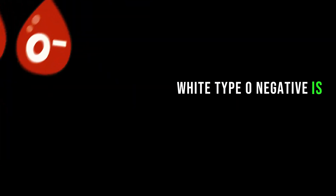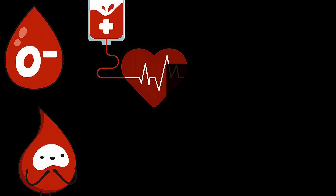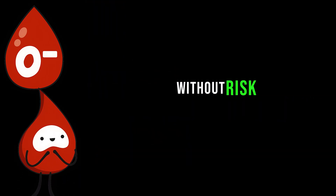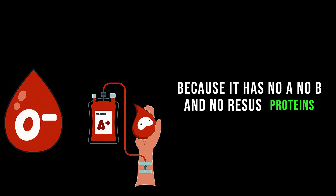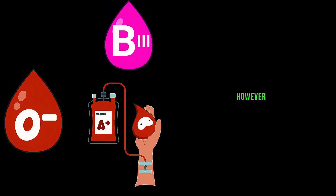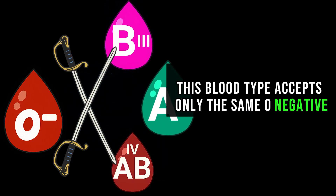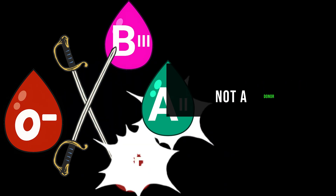While type O negative is rare, it is considered a universal donor, which means it can be transfused to anyone without risk of an immune reaction, because it has no A, no B, and no Rhesus proteins. However, this blood type accepts only the same O negative when a person is a blood receiver, not a donor.